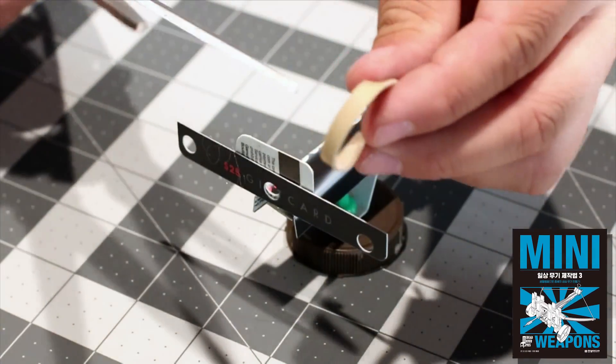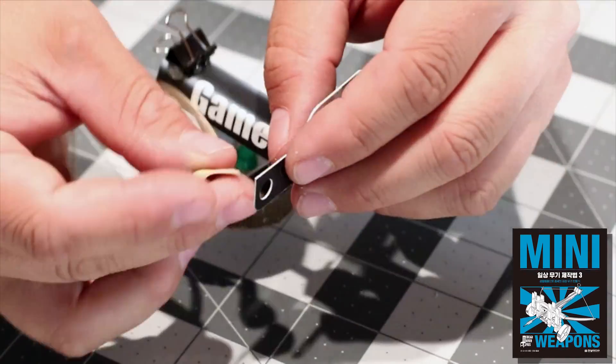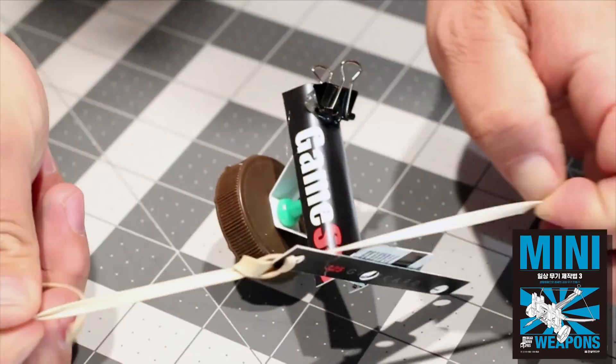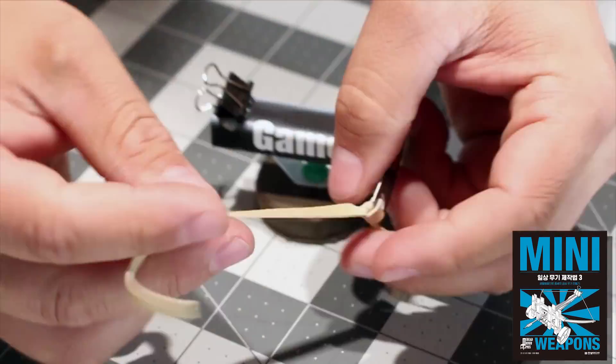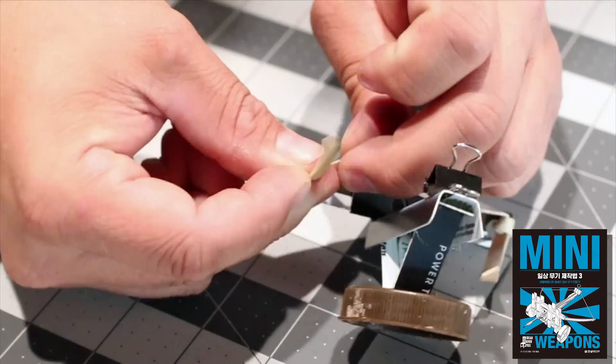This desktop siege weapon will be using a non-traditional rubber band bowstring. With scissors, cut open a wide rubber band, then tie both ends of the rubber band to the opposite ends of the bow using the outer holes as tie downs. The mounted rubber band should have minimal slack.